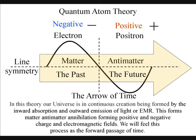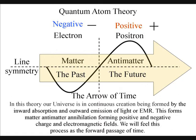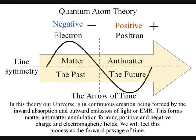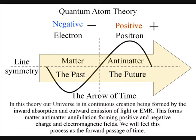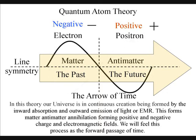In quantum atom theory, this is not because antimatter is moving backwards in time, but because this process is forming part of the forward passage of time itself. Time only ever moves one way, therefore it is always antimatter that is annihilated.